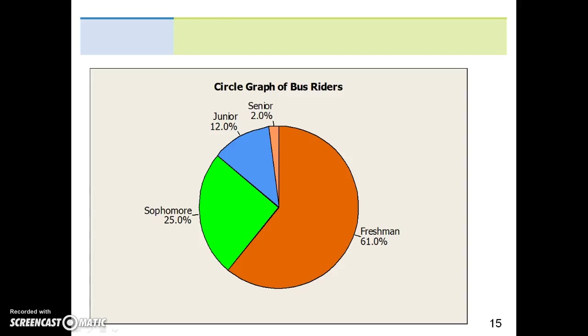This is what your graph should look like, the circle graph of bus riders. As the information is provided, 61% freshmen, 25% sophomores, juniors 12%, seniors 2%. So here, the percentages were already provided, and they did not need to be calculated from a specific proportion.